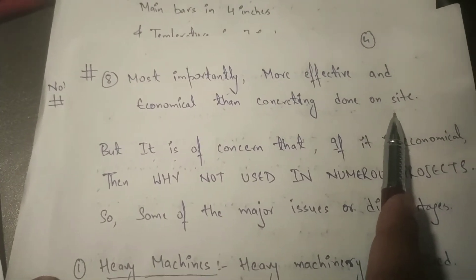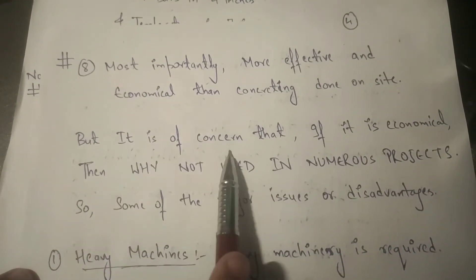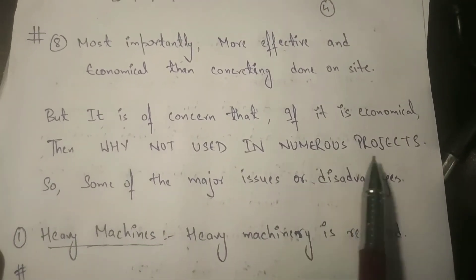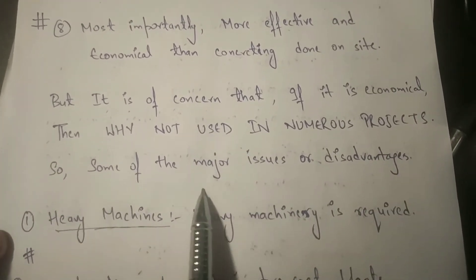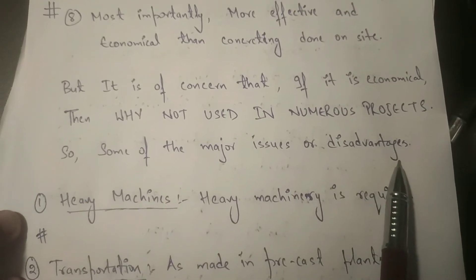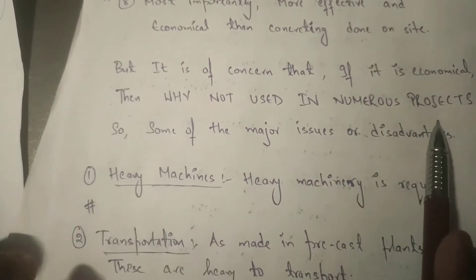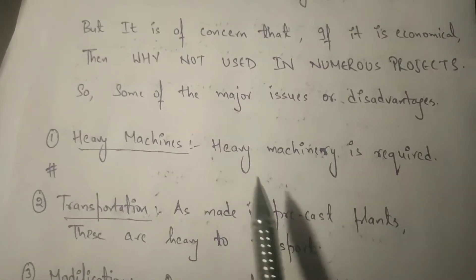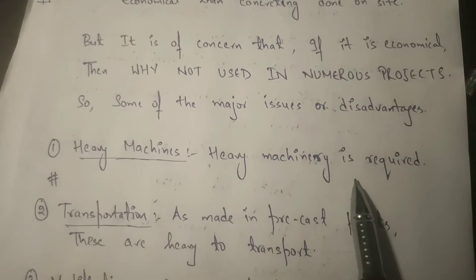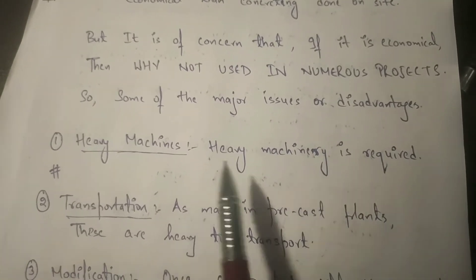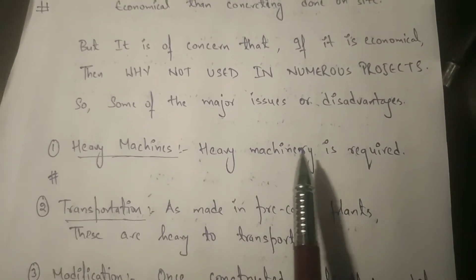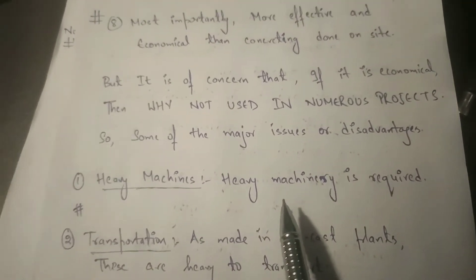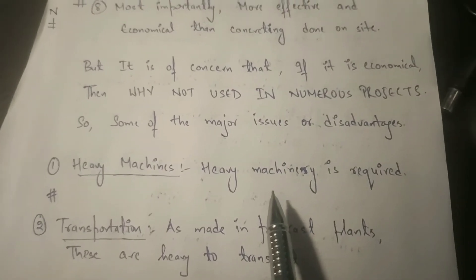It is more economical than liquid concreting done on site. But the concern is: if it is economical, then why is it not used in numerous projects? Some of the major issues or disadvantages explain why they are not widely used in our country. First, heavy machinery is required — that is a major issue. As you see in big flyovers and bridges, heavy machines are used for lifting and placing in position.